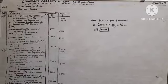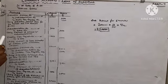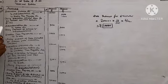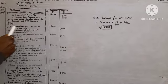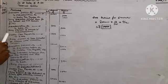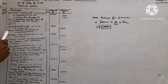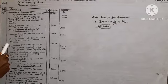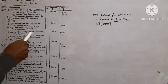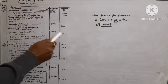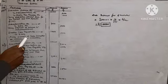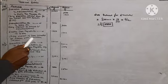Narration: being debenture interest due for 6 months and TDS thereon at the rate of 10%. For payment of interest: Debenture Holder Account Debit to Bank Rs. 9,000. Narration: being payment of interest to debenture holder. For deposit of tax deducted at source: Income Tax Payable Account Debit to Bank Rs. 1,000. Narration: being deposit of tax deducted at source from debenture interest.